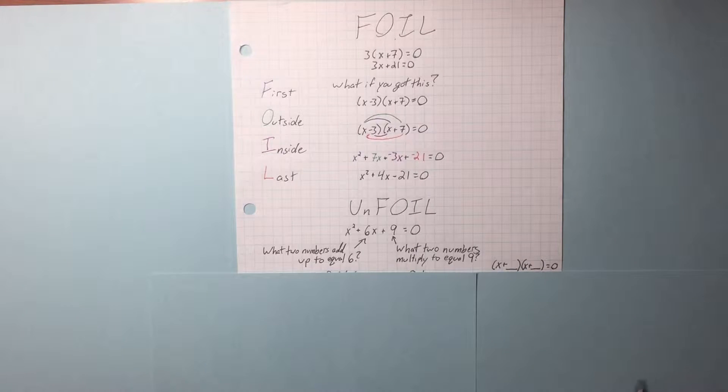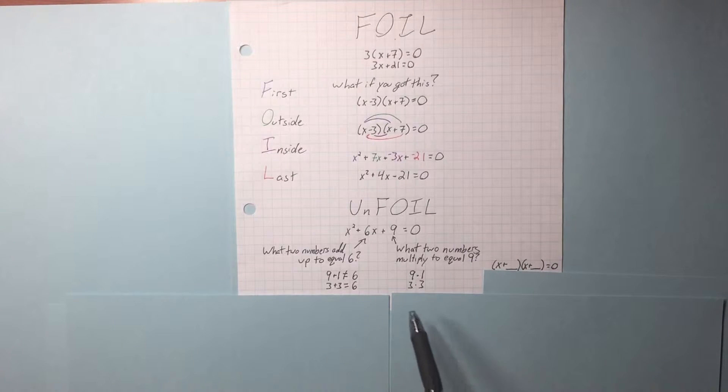Our blank parentheses look like this. And we need to figure out what goes here and here. 9 and 1. Do those two same numbers add up to equal 6? No. 3 and 3. Yes! We can plug in our 3 and our 3 into our empty parentheses. x plus 3, x plus 3.